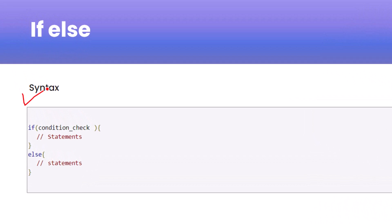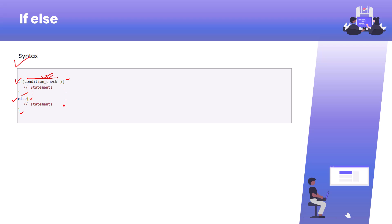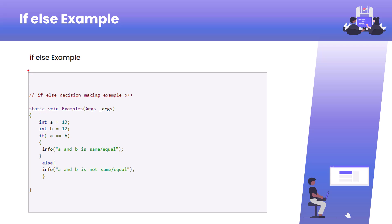In the slide you can see the if-else syntax. First we give the keyword if, then inside the brackets we write our condition. If this condition is true, whatever lines of code are inside the if block will execute. If the condition is false, it will go to the else block and whatever lines are present inside those brackets will execute. This is the syntax of if-else.